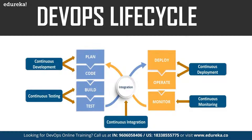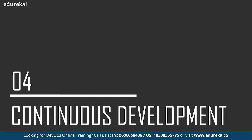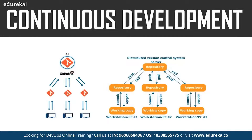The first phase of the DevOps lifecycle is continuous development. This phase involves planning and coding of the software application's functionality. There are no tools for planning as such, but there are a number of tools for maintaining the code. The vision of the project is decided during the planning phase, and then the actual coding begins. The code can be written in any language but is maintained using version control tools. The most popular tools used are Git, SVN, Mercurial, CVS, and Jira. Tools such as Ant, Maven, and Gradle can also be used for building or packaging the code into an executable file to be forwarded to the next phases.